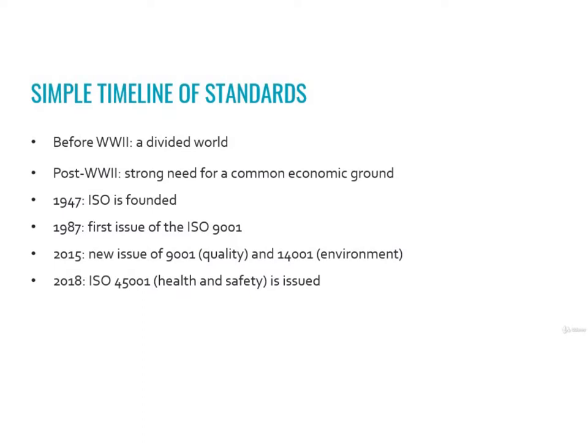Years passed and ISO kept issuing standards. In 2015, ISO issued the latest editions of ISO 9001 (quality standard) and ISO 14001 (environment standard). This edition was quite crucial because the layout of the various topics was completely rearranged. This new layout is called the High Level Structure and would be followed by all subsequent management system standards. Finally, in 2018, ISO 45001 — the first ISO standard on occupational health and safety — was issued.